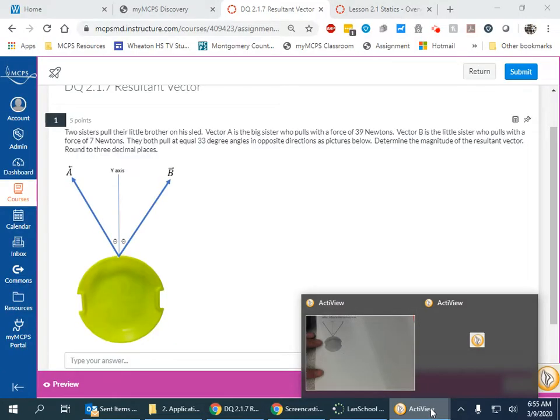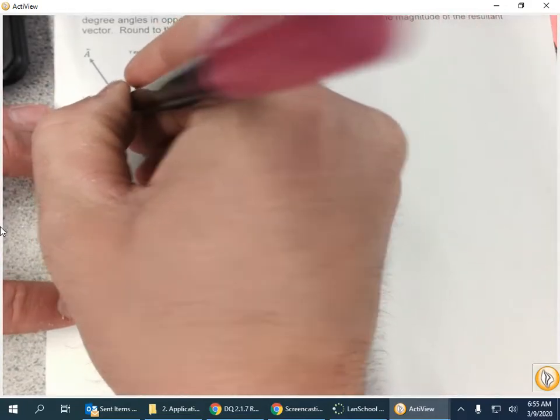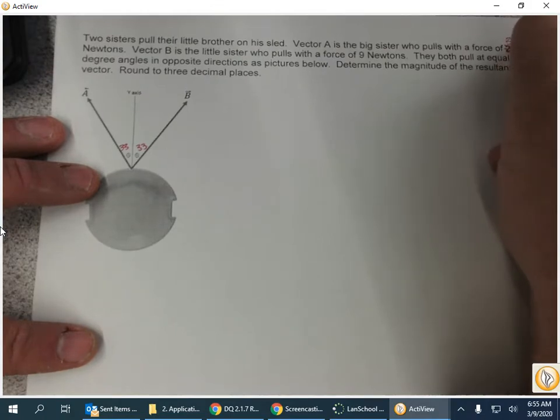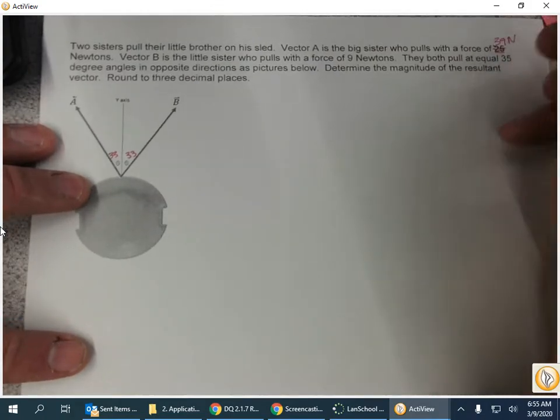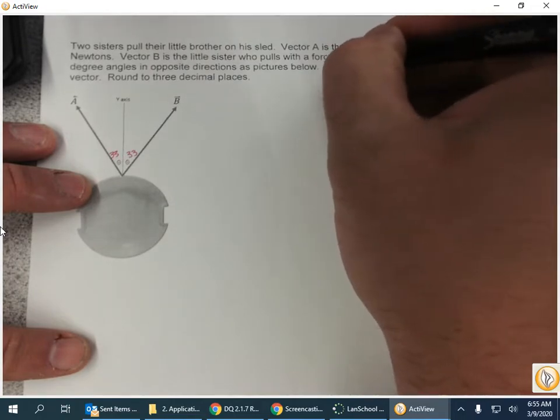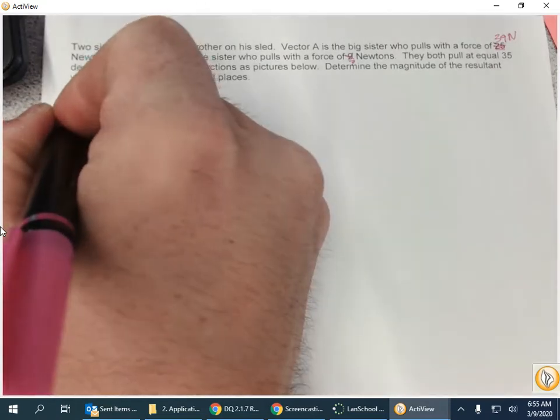39, 7, and 33. So 33, 33, and vector A is 39 newtons and vector B is 7 newtons. So 7 newtons and 39 newtons.